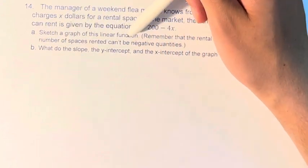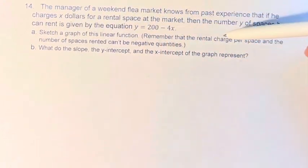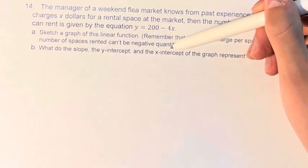First, we're asked to sketch a graph of this linear function. Remember that the rental charge per space and the number of spaces rented can't be negative quantities.